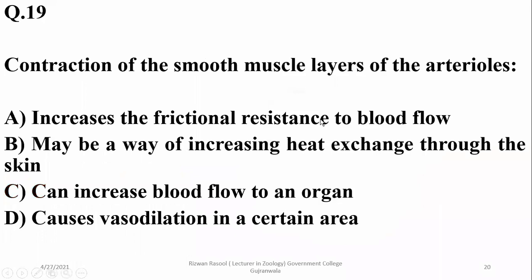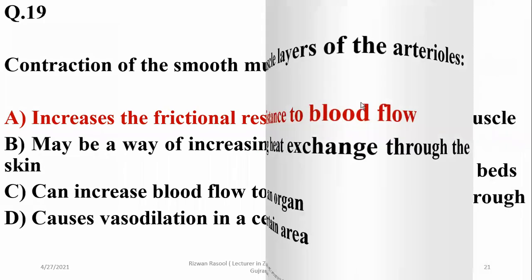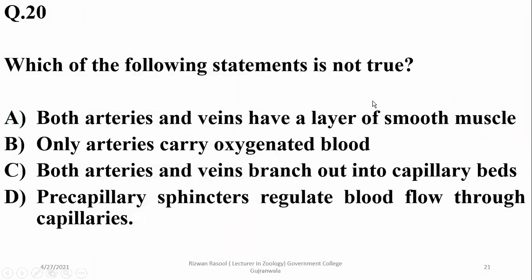Contraction of the smooth muscle layer of arteries is vasoconstriction, which increases frictional resistance to blood flow in an area and reduces blood flow. It does not increase heat exchange — it reduces it. It cannot increase blood flow to an organ; it reduces it. And it is vasoconstriction, not vasodilation.